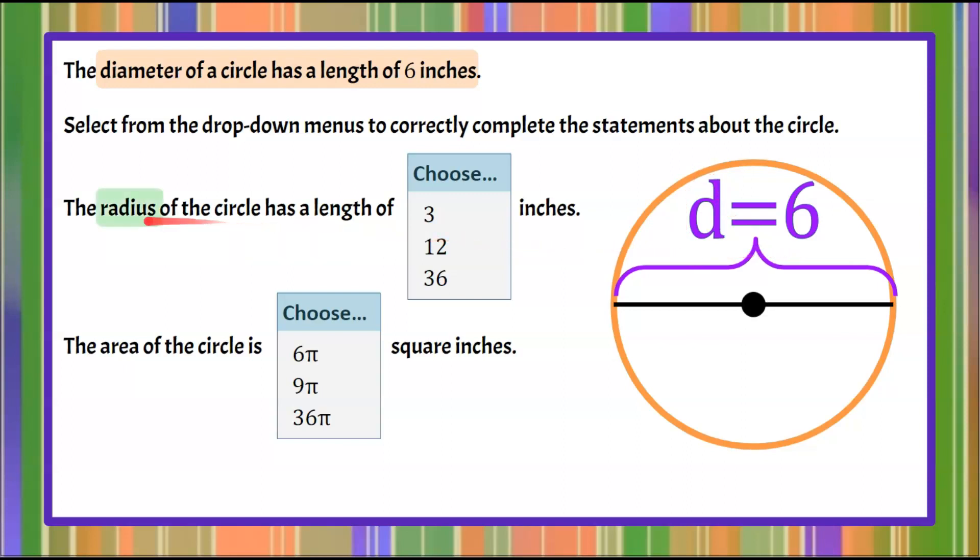Now we've been asked to find the radius of this circle. The radius is from the center of the circle to any exterior point on the circle. So it is half of the diameter. So we can draw this. Here's a radius, and that is going to be half of six, which is three.